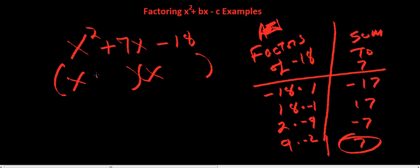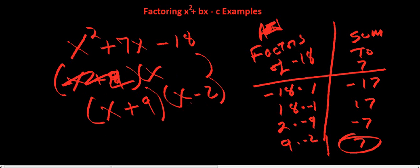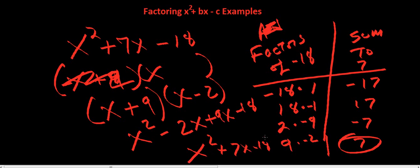You got (x + 9)(x - 2). When you multiply it out, you get x² - 2x + 9x - 18, and that gives us x² + 7x - 18, right?